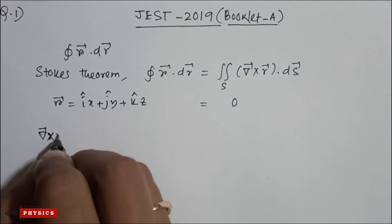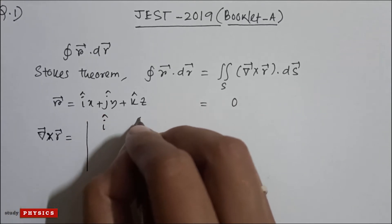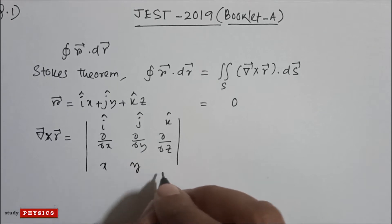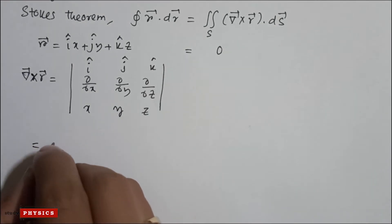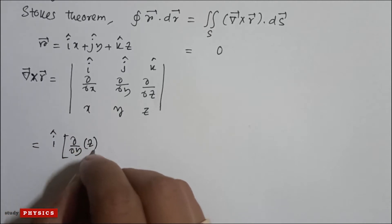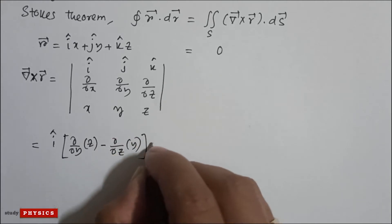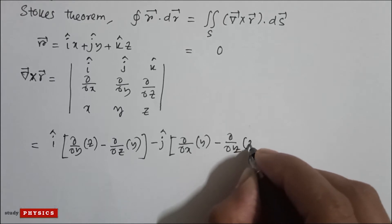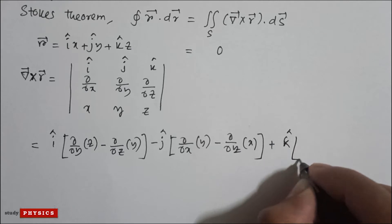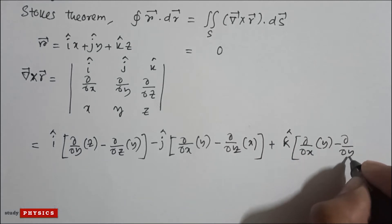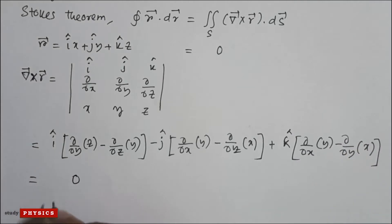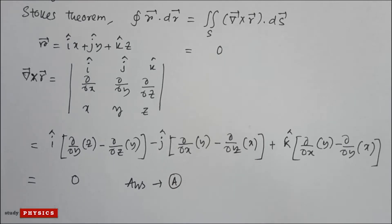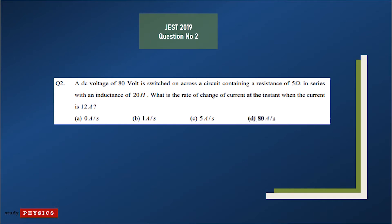Curl of R is the determinant with i-cap, j-cap, k-cap in the first row; ∂/∂x, ∂/∂y, ∂/∂z in the second; and x, y, z in the third. Expanding: i-cap(∂z/∂y − ∂y/∂z) − j-cap(∂z/∂x − ∂x/∂z) + k-cap(∂y/∂x − ∂x/∂y), which is zero. So the correct option is A.